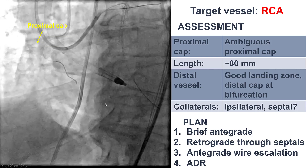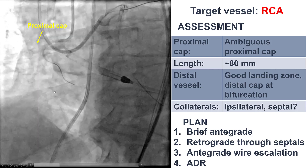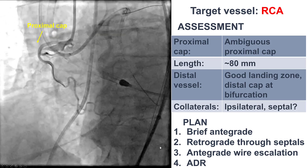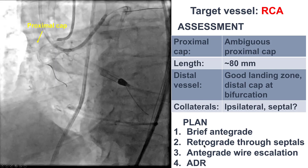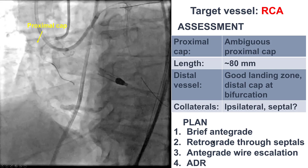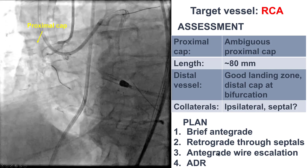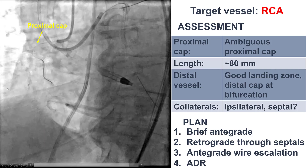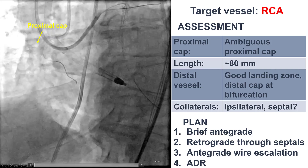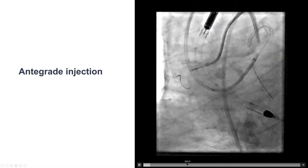Our plan was to try antegrade first. If it didn't work, go retrograde through septals, although we did not have a continuous connection. If that didn't work, do antegrade wiring; and then if it didn't work, do antegrade dissection re-entry.